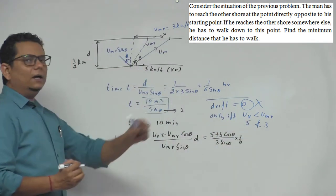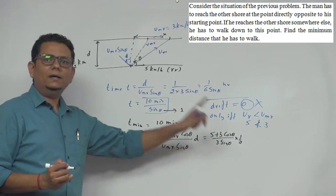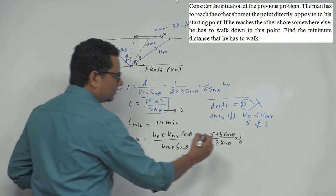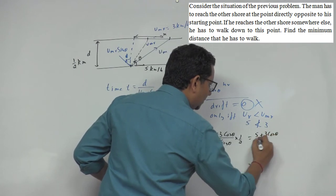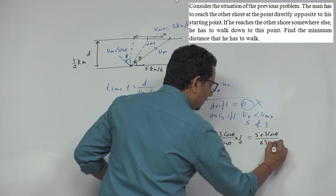This is the value of drift. Now in this case, for the minimum value of drift, we need to differentiate this. So we calculate: 5 plus 3 cos theta divided by 6 sin theta.